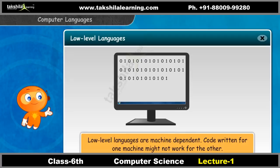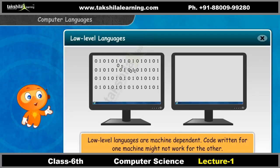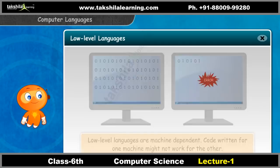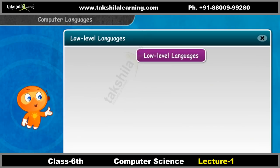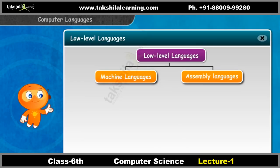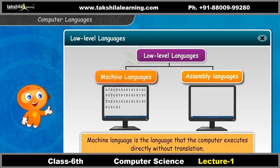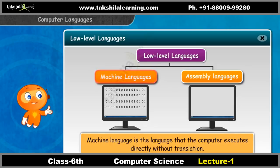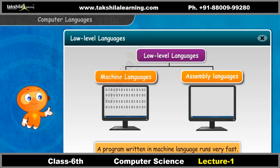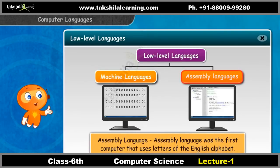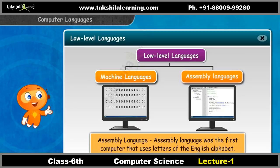Low level languages are machine dependent. Code written for one machine might not work for the other. There are two kinds of low level languages: machine language and assembly language. Machine language is the language that the computer executes directly without translation. All instructions are written in the form of zeros and ones, so a program written in machine language runs very fast. Assembly language was the first computer language that uses letters of the English alphabet. Each instruction tells the computer where the data is and what to do with it.